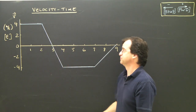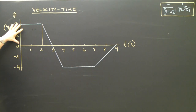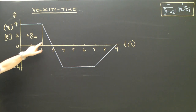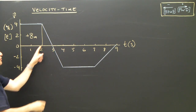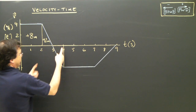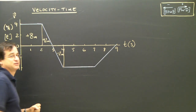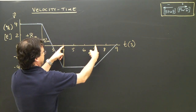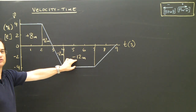Now let's look at the area, which is what we really wanted to do. I'll break it up into pieces. In the first section, the area is four times two — positive eight meters. The units are meters because meters per second times seconds gives meters. The next section is a triangle: base times height divided by two, so four times one divided by two equals two meters forward. The next triangle area is negative four times one divided by two, giving negative two meters. The large rectangle has height negative four and base three, so four times three equals negative twelve meters — I've gone backwards twelve meters.